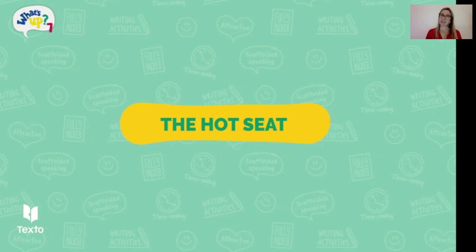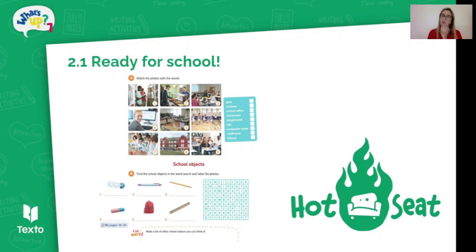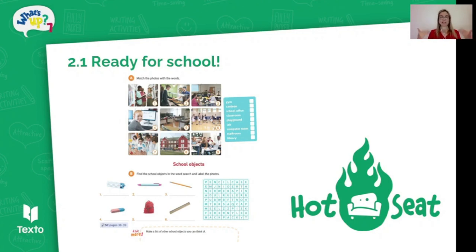Moving on to the Hot Seat. The hot seat is something you may have heard of in other presentations. The idea is that you get one chair and place it at the front of the class, then get a volunteer student to sit on the hot seat. You will then have a word projected or written behind the student who is sitting on the hot seat. Let's say we're working with unit 2.1, which is about school facilities and school objects — you would write a word like 'pencil case' on the board behind the student.